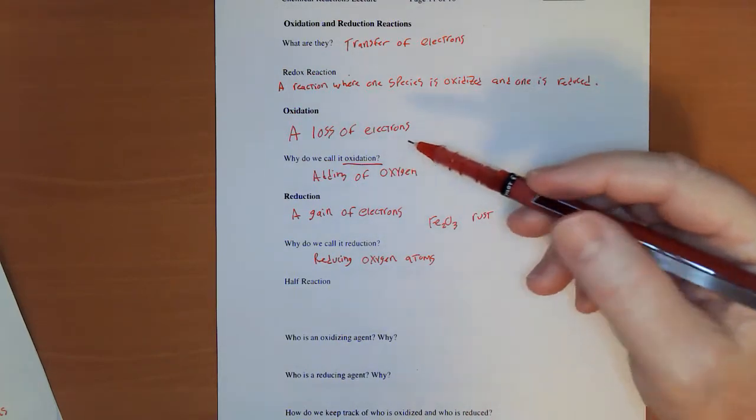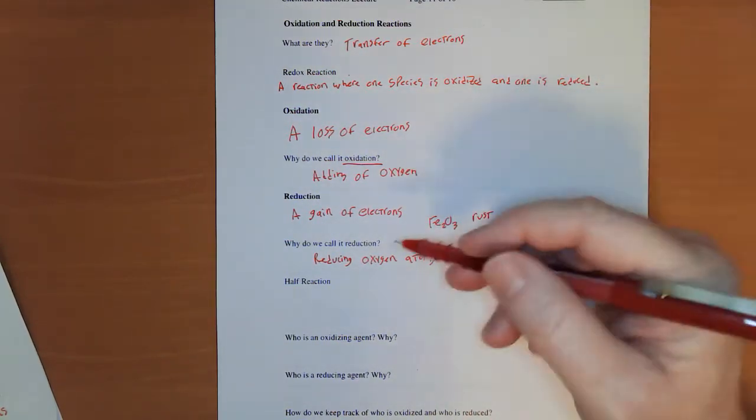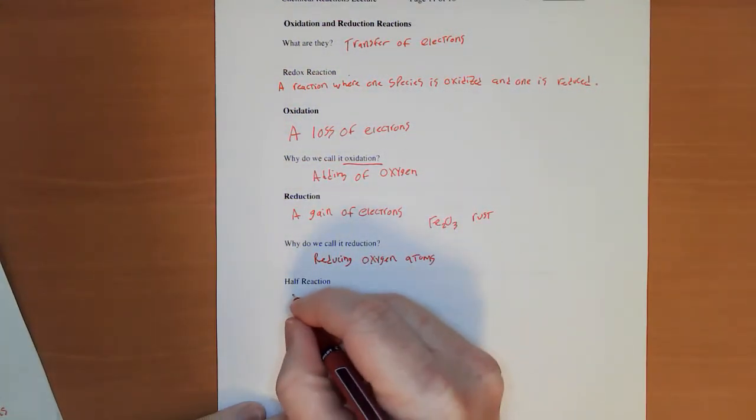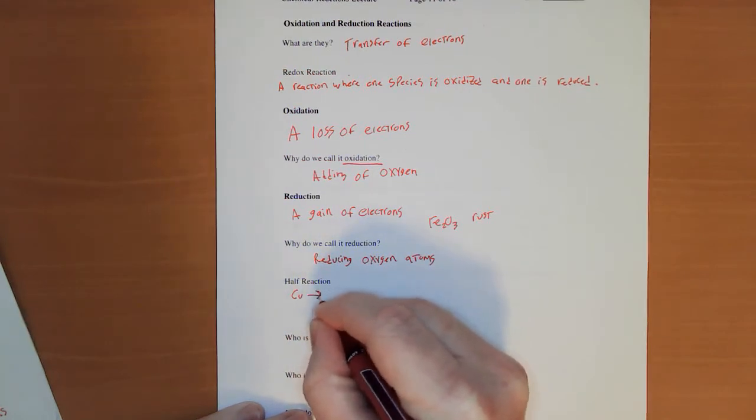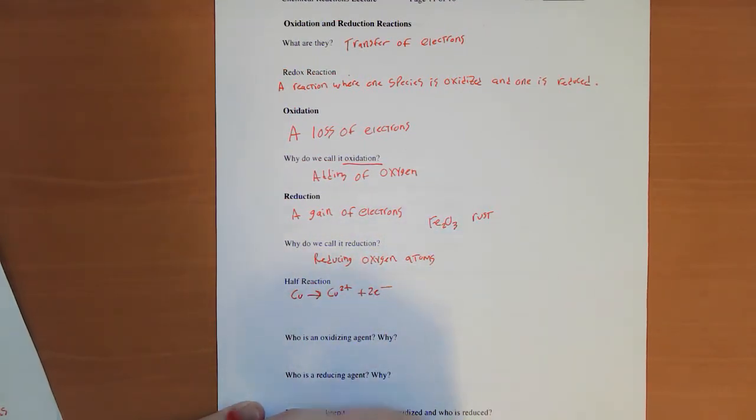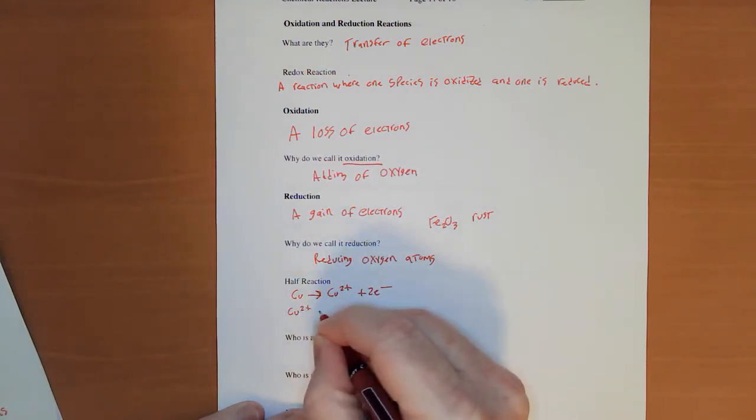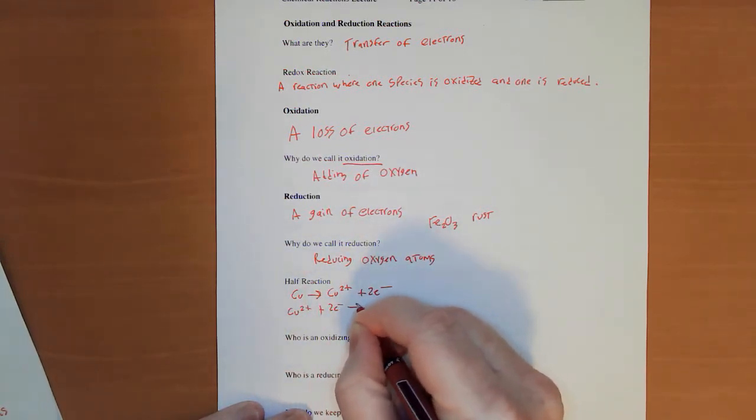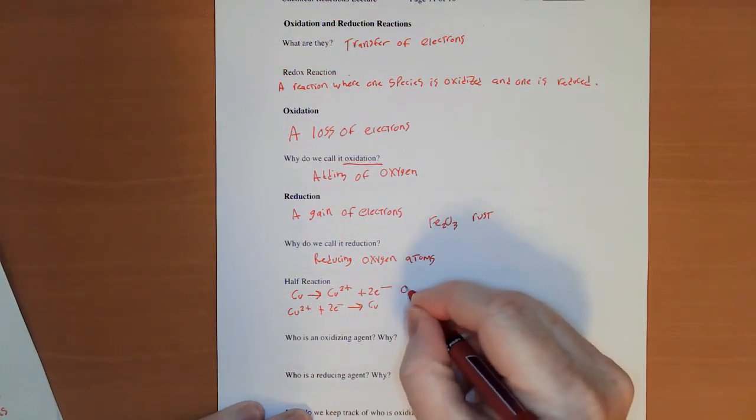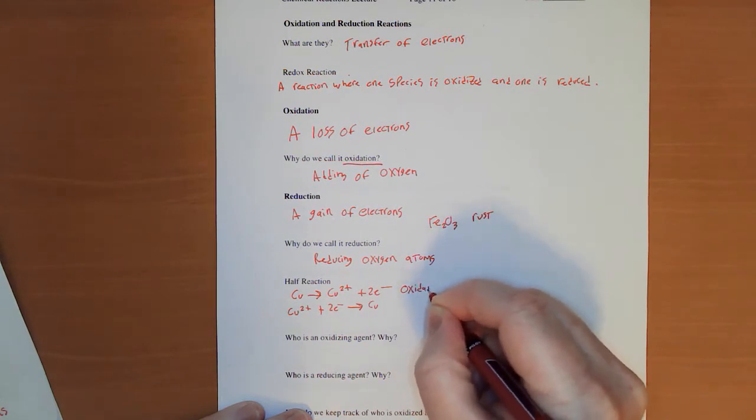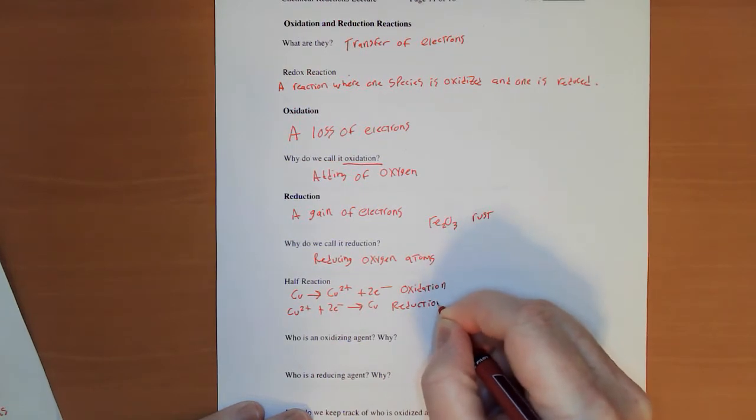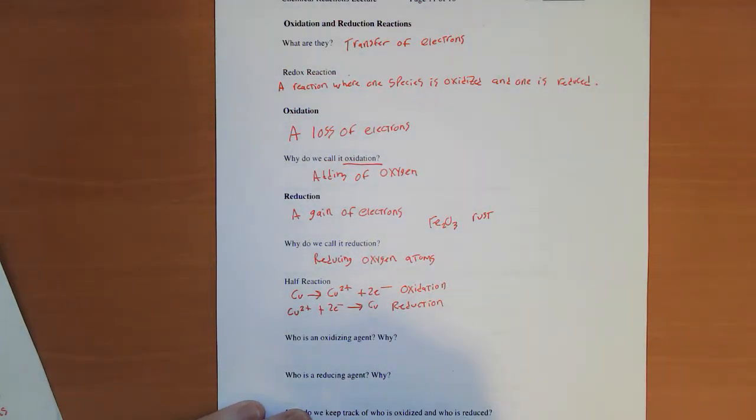So when we talk about just an oxidation or just a reduction on its own, we're referring to that as a half reaction. So like copper turning into copper 2+ plus 2 electrons, or copper 2+ plus 2 electrons turning into copper. Those are both half reactions. This is the oxidation version and this is the reduction version of it.